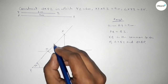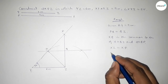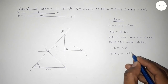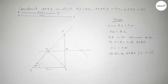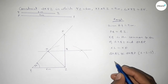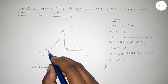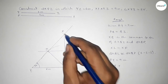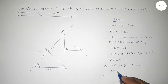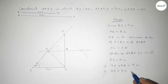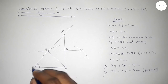Therefore XZ equals XP. Now we can write PY equals 9 centimeter, and PY can be written into two segments: XY plus XP equals XY plus XZ equals 9 centimeter. So that's the proof.